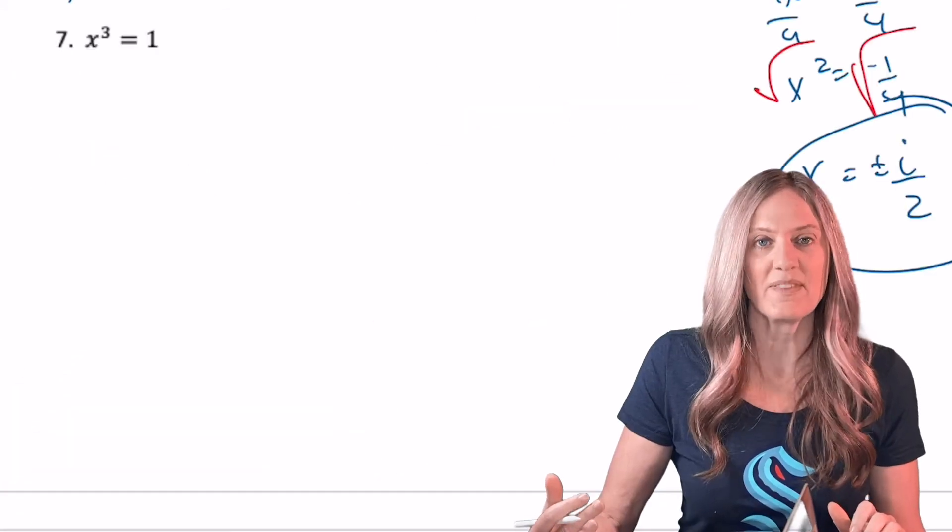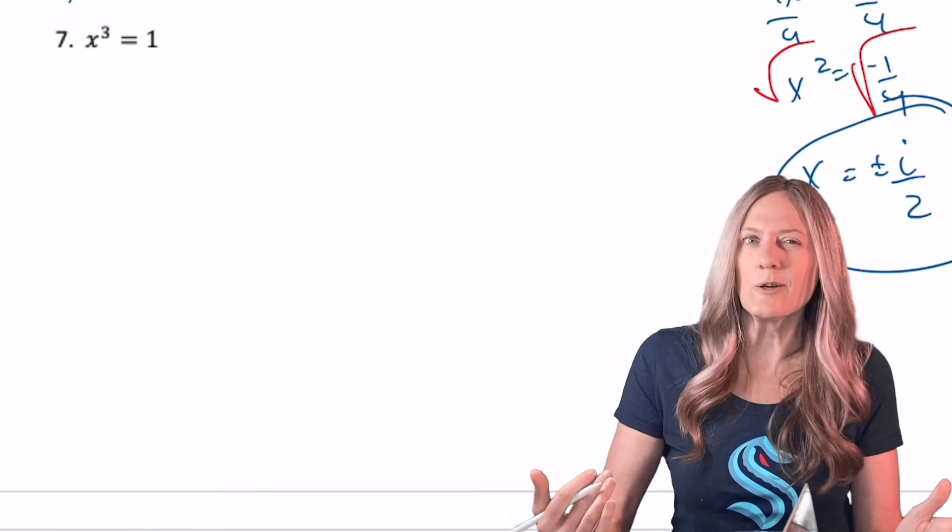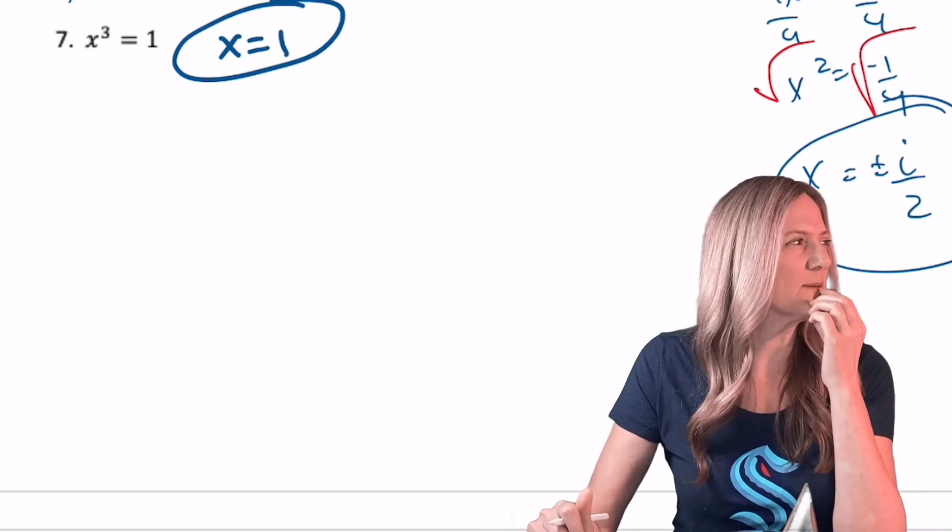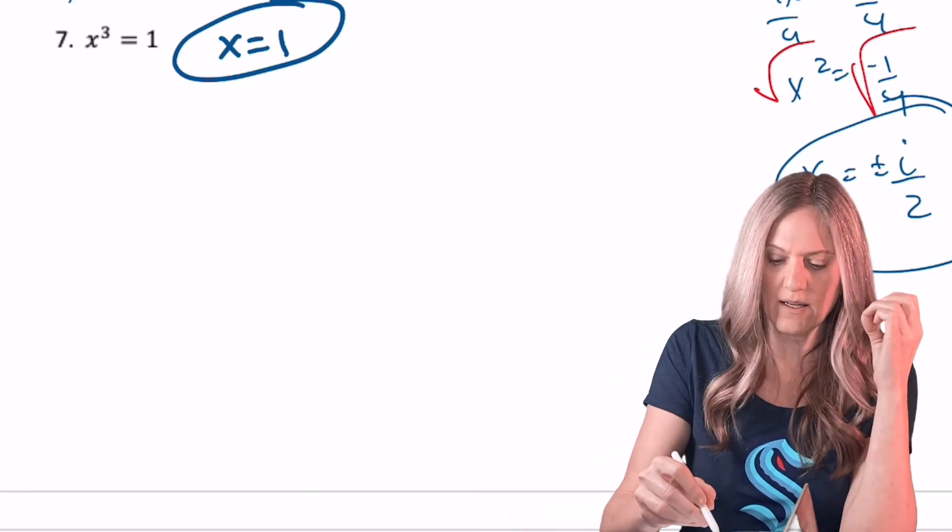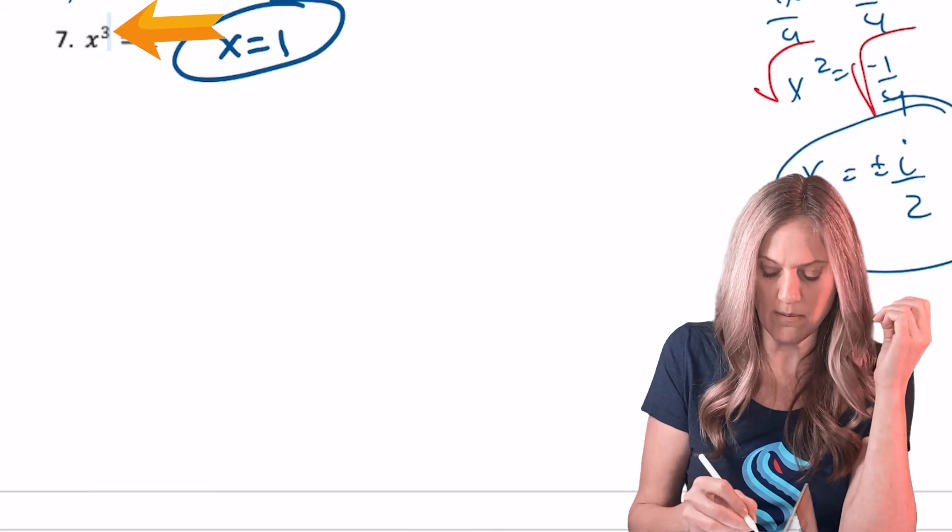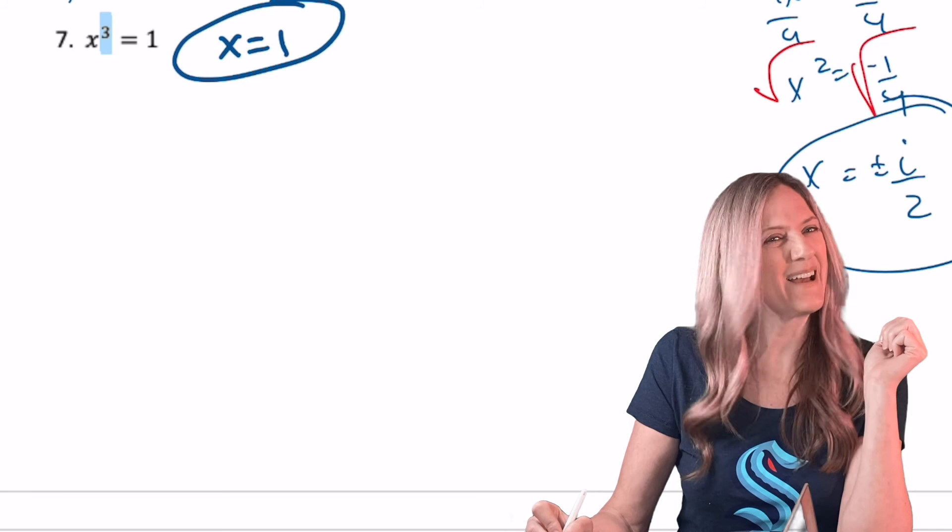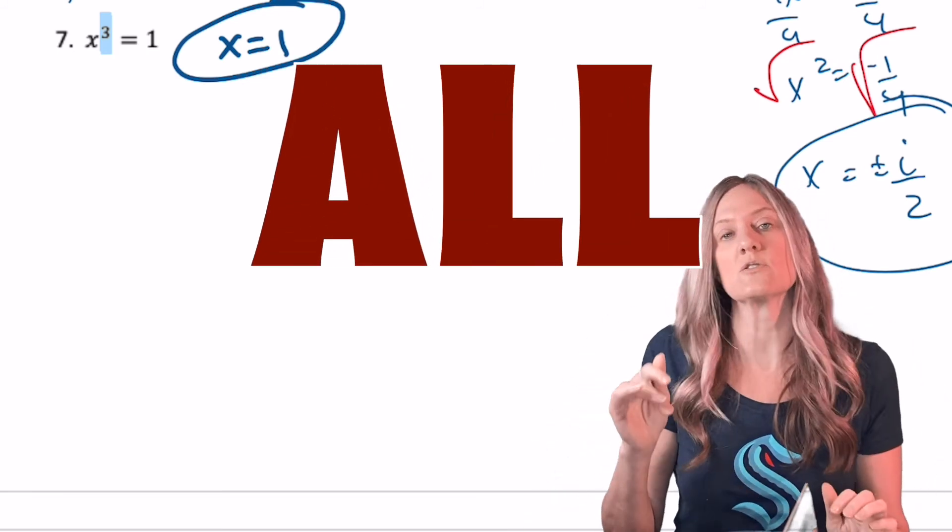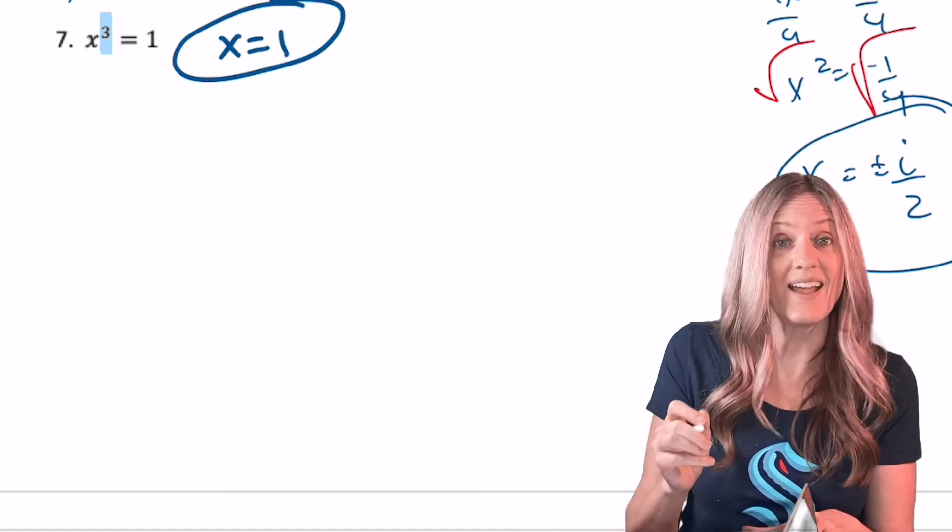Last problem. Let's get cracking. X cubed equals one. That seems way too easy. One cubed equals one. X equals one. I'm done. Seems like there's something wrong. Wait, wait, wait. It's a cubic. So I'm supposed to get three solutions. Yeah, I'm not done. Three solutions. Right now we're solving for all solutions, real and imaginary. So I need to set this equal to zero and then crack it.